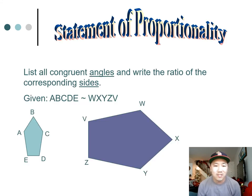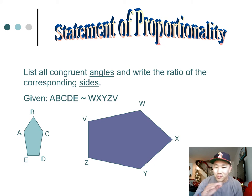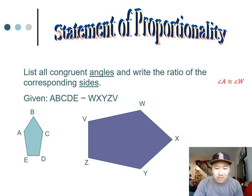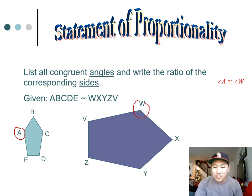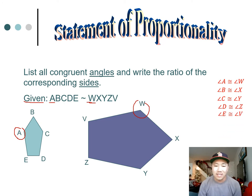The first part of the homework asks you to do a statement of proportionality — list all the angles that are congruent and then write the ratios of the corresponding sides. Starting with the angles: angle A matches up with angle W. You match them up based on position in the given. Then angle B matches with angle X, angle C with angle Y, angle D with angle Z, and angle E with angle V.